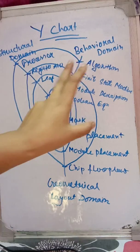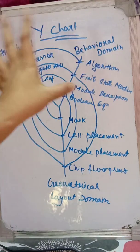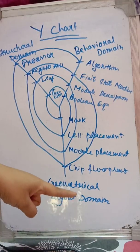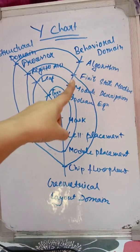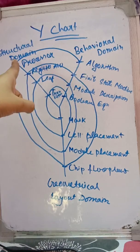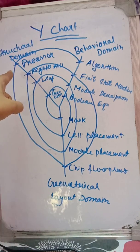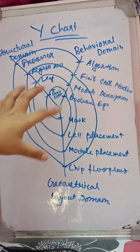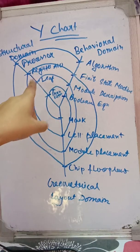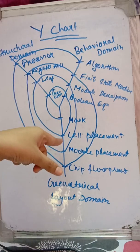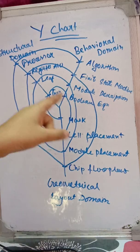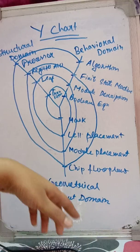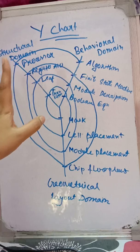This spiral describes the Y-chart flow: starting with Algorithm in the behavioral domain, moving to Processor in the structural domain, then to Chip Floor Plan in the geometrical layout domain, then back to Finite State Machine, then to Register/ALU, then to Module Placement, then to Module Description, then to Leaf, then to Cell Placement, then to Boolean Equation, then to Transistor, and finally to Mask.